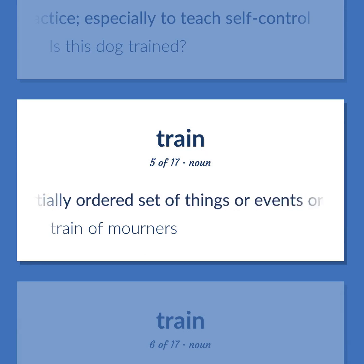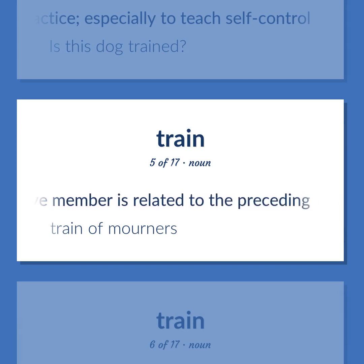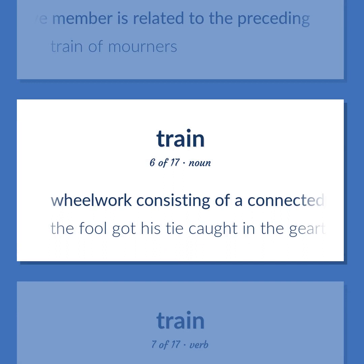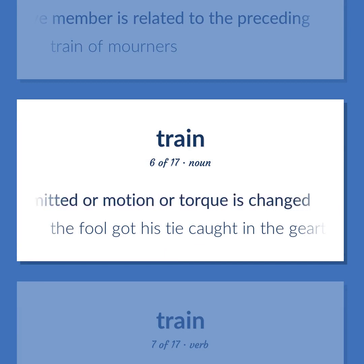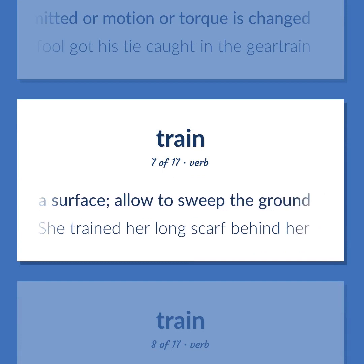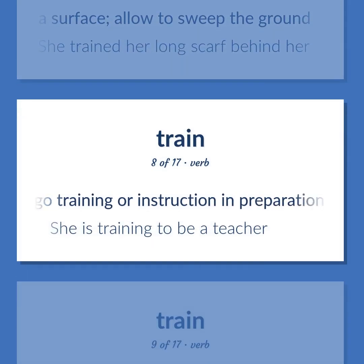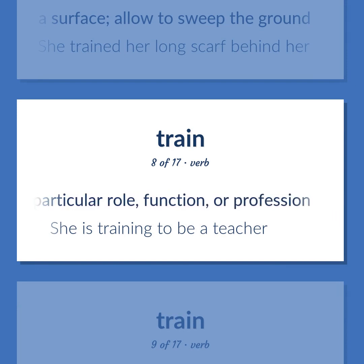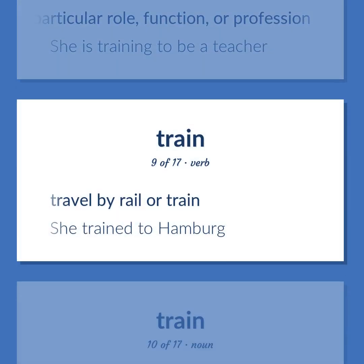Train: a sequentially ordered set of things, events, or ideas in which each successive member is related to the preceding — 'Train of mourners.' Wheelwork consisting of a connected set of rotating gears by which force is transmitted — 'The fool got his tie caught in the gear train.' Drag loosely along a surface; allow to sweep the ground — 'She trained her long scarf behind her.' Undergo training or instruction in preparation for a particular role, function, or profession — 'She is training to be a teacher.' Travel by rail or train — 'She trained to Hamburg.'